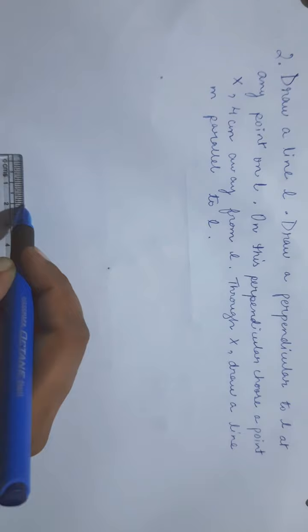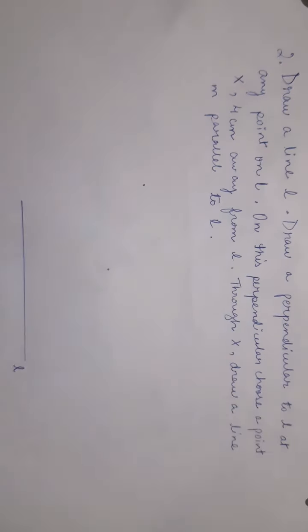In question number two, we have to draw parallel lines. First, draw a line L — measurement is not given, so you can take any measurement. Draw a perpendicular to L at any point on L. So what you have to do is draw a perpendicular line. Perpendicular means if this is the line, this is the perpendicular.